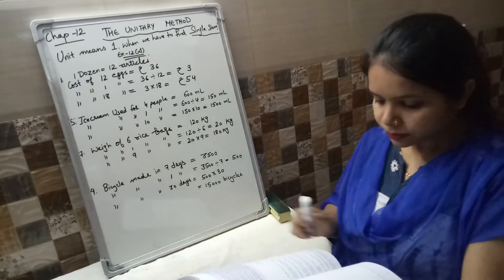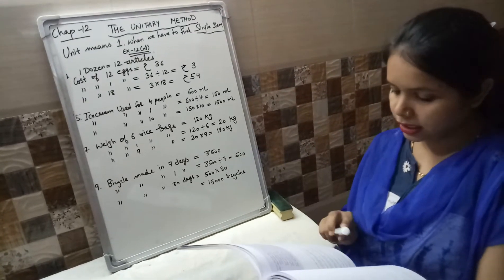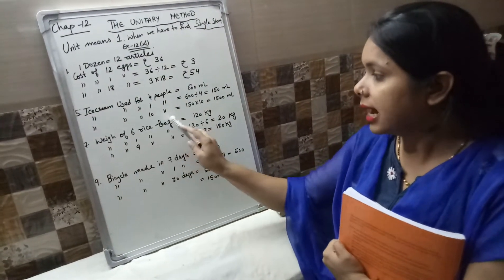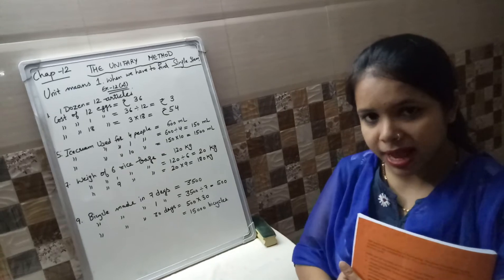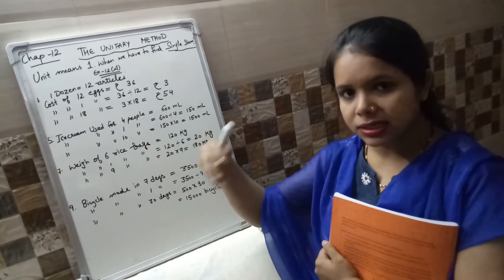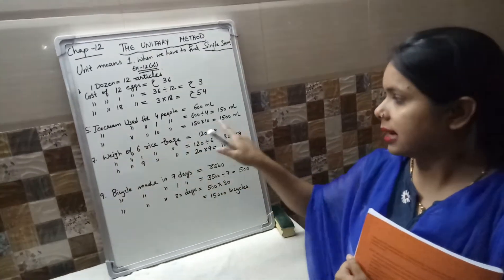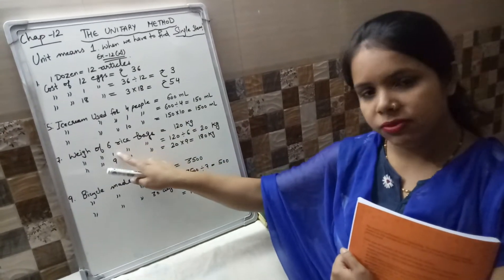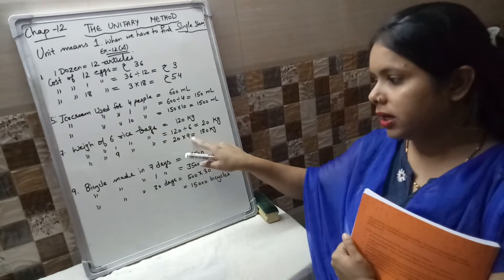Question number 7: 6 bags of rice weigh 120 kg. How much will 9 such bags weigh? Weight of 6 rice bags is 120 kg. To find weight of 1 rice bag, we do division: 120 divided by 6 is 20 kg. And weight of 9 bags is 20 multiplied by 9, which is 180 kg.